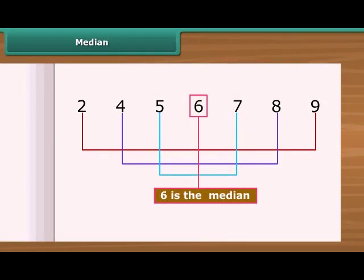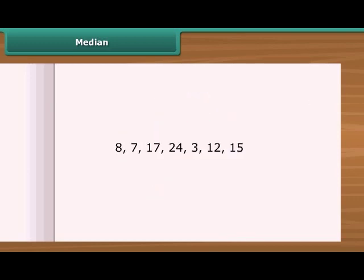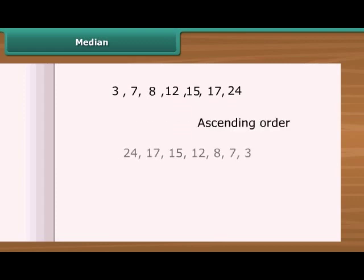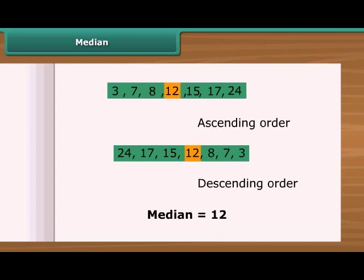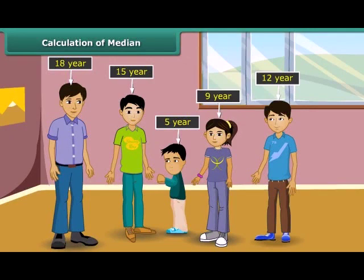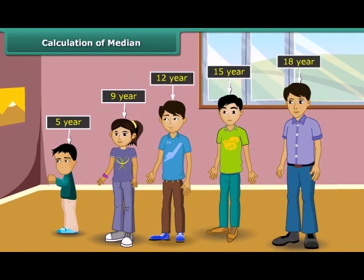Median is the value which lies in the middle of a group of numbers that have been arranged in order by size. Let us find the median of these numbers. Firstly, we need to put these numbers in ascending or descending order. You can see the middle number is 12 — it has 3 numbers to its right and 3 numbers to its left. So the median is 12. The Goyangar family has 5 children aged 9, 12, 5, 18 and 15. What is the age of the middle child? First, order the ages from least to greatest. The age of the middle child is the middlemost number in the data set, which is 12. Likewise, you can find out the median of various data.